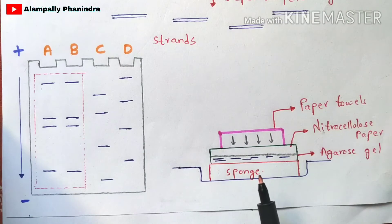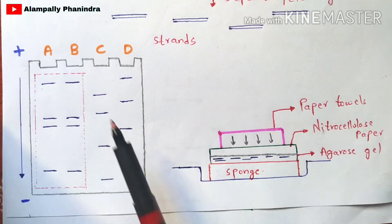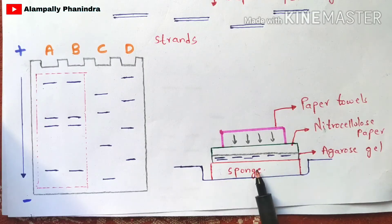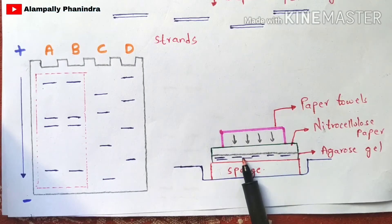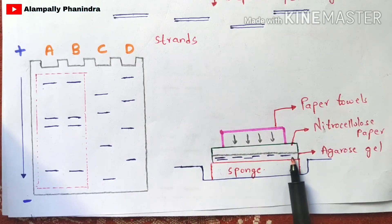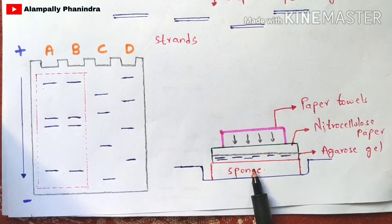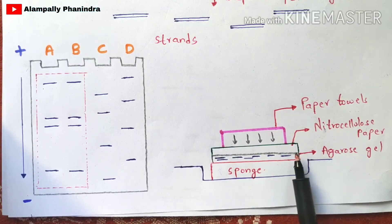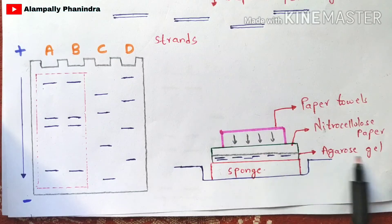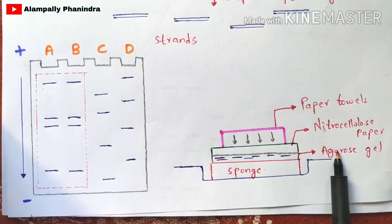Next, you remove the agarose gel containing all the separated strands. You take a trough and place a sponge in it. On this sponge you place the agarose gel with the separated strands. On top of the agarose gel you place a nitrocellulose paper — indicated by the green color in the diagram — above the agarose gel containing the separated DNA strands.